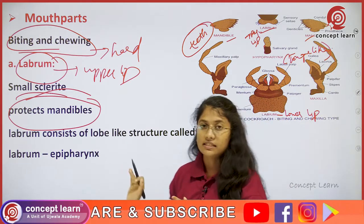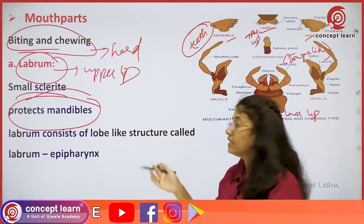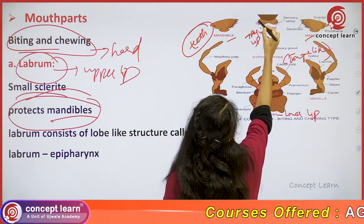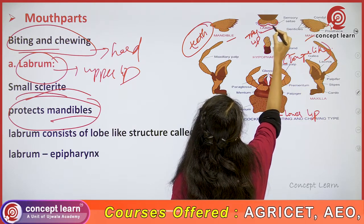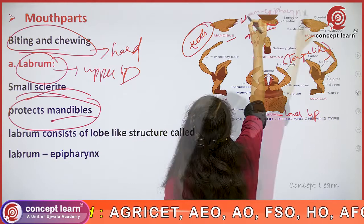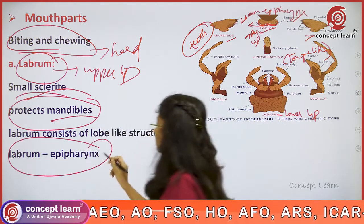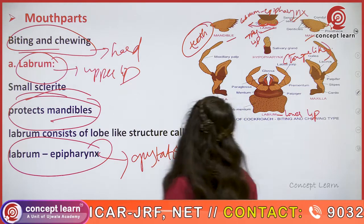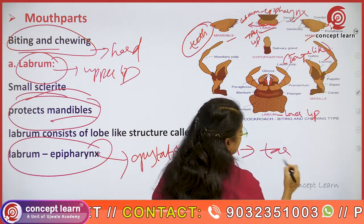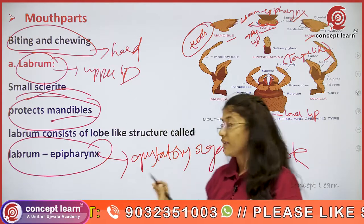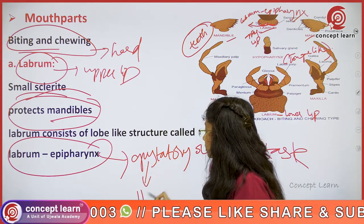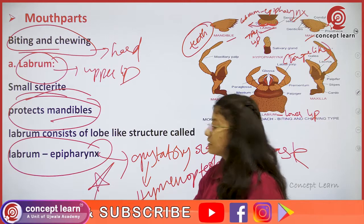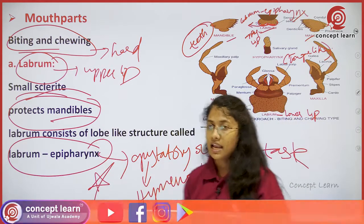Similarly, the labrum which is known as the upper lip protects the mandibles — the teeth-like structures. In its inner lobe, the labrum has a labrum-epipharynx, which acts as a gustatory organ, meaning it helps in the detection of taste. The labrum is found to be very well developed in the order Hymenoptera. The labrum-epipharynx is a lobe-like structure present within the labrum.